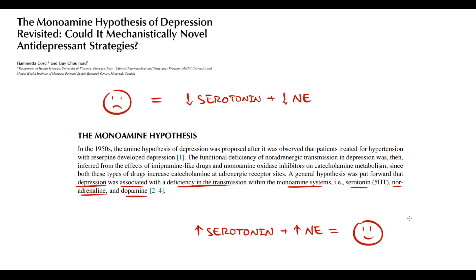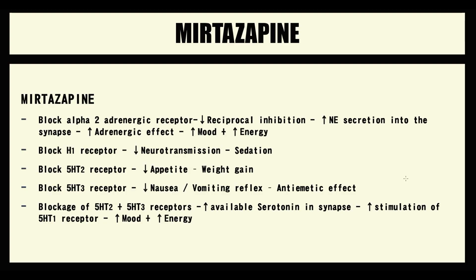Drugs that cause increasing serotonin or norepinephrine in the synapse we call antidepressants. One of these antidepressants is called mirtazapine. Mirtazapine is an atypical antidepressant because of its multiple effects. First of all, mirtazapine blocks alpha-2 adrenergic receptors.